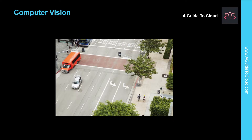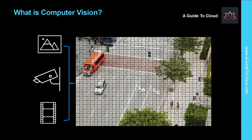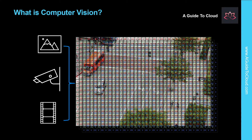So what is computer vision? Computer vision is one of the core areas of artificial intelligence and focuses on creating solutions that enable AI-enabled applications to see the world and make sense of it. Computers don't have biological eyes that work the way ours do, but they are capable of processing images either from a live camera feed or from digital photographs or videos. This ability to process images is the key to creating software that can emulate human vision perception. To an AI application, an image is just an array of pixel values. These numeric values can be used as features to train machine learning models that can make predictions about the image and its contents.